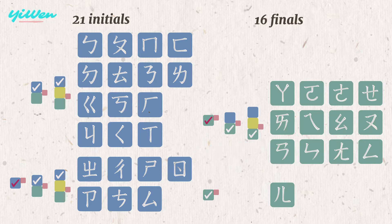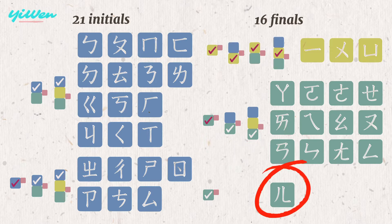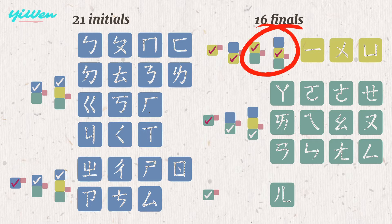Except for the last one, the finals like to appear alone. But for the three unique finals, they can appear alone at the bottom, even on the top as well as in the middle. It's not necessary to memorize every position — it just shows the structure of a Mandarin syllable in Bopomofo.